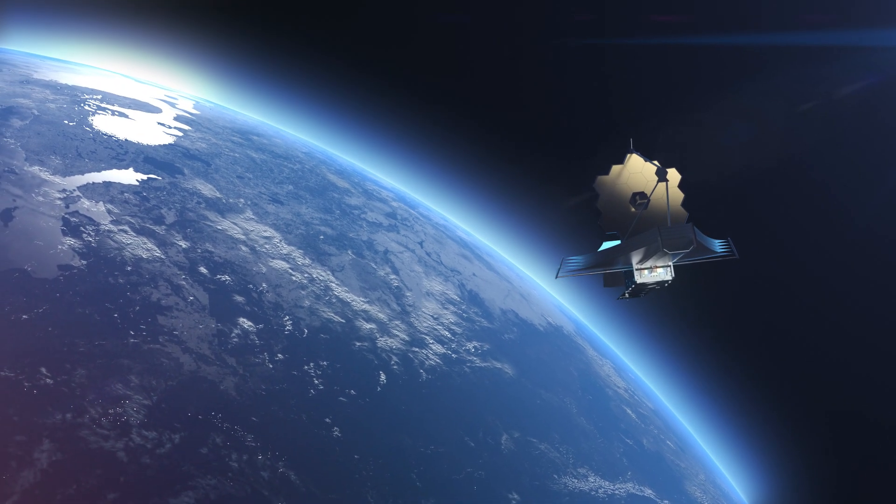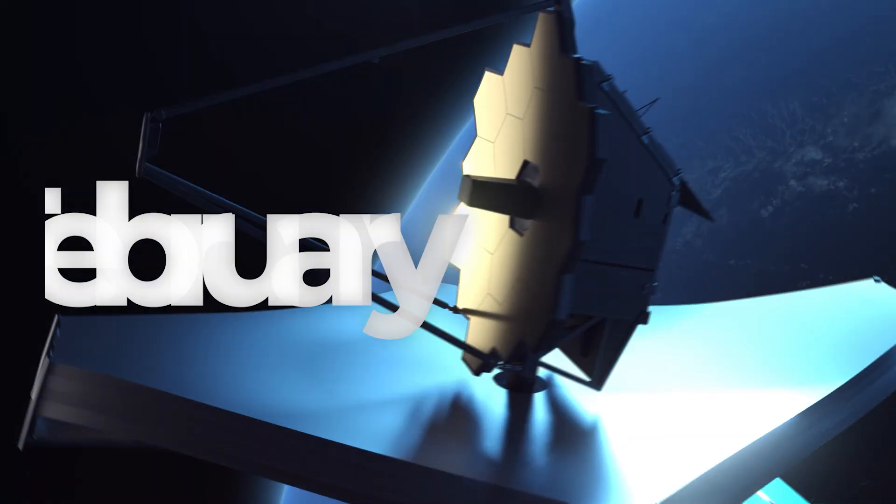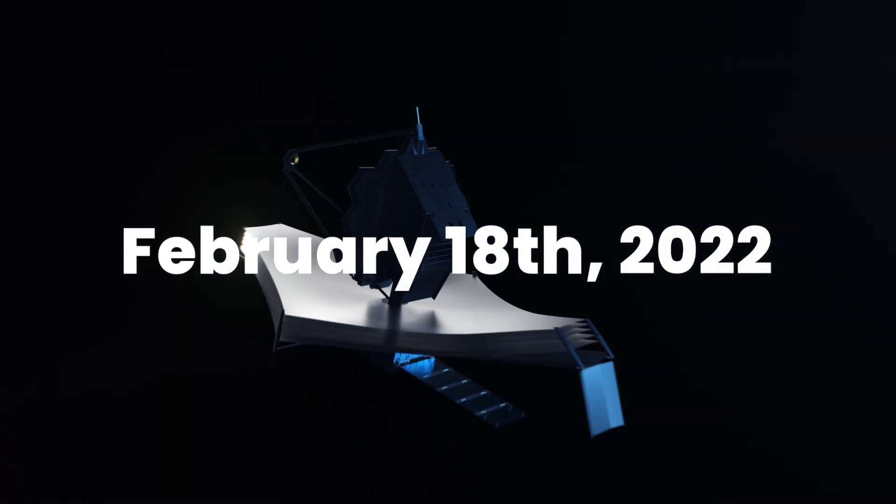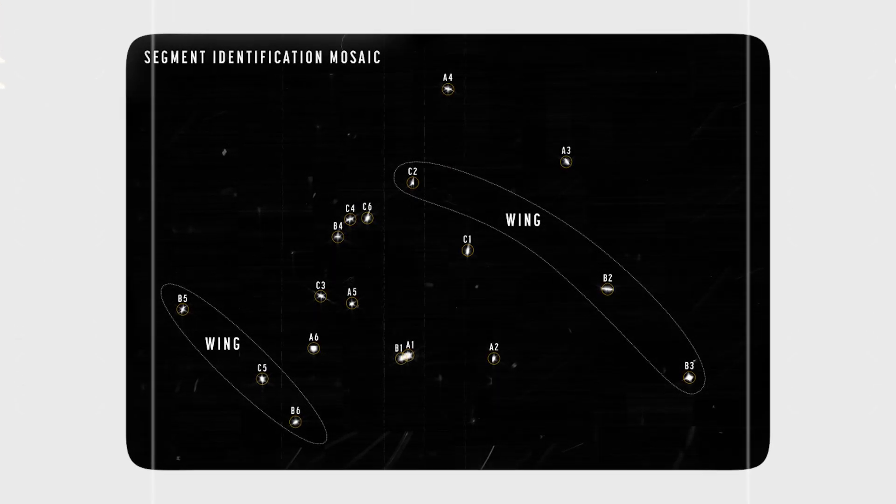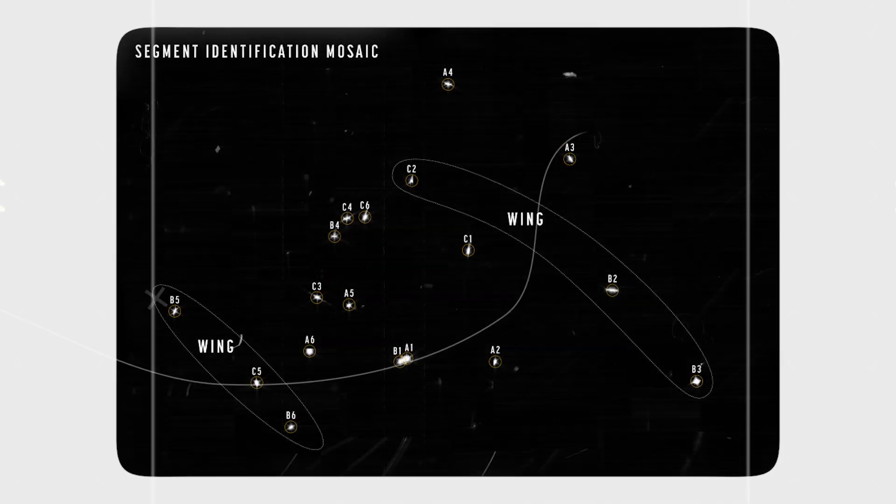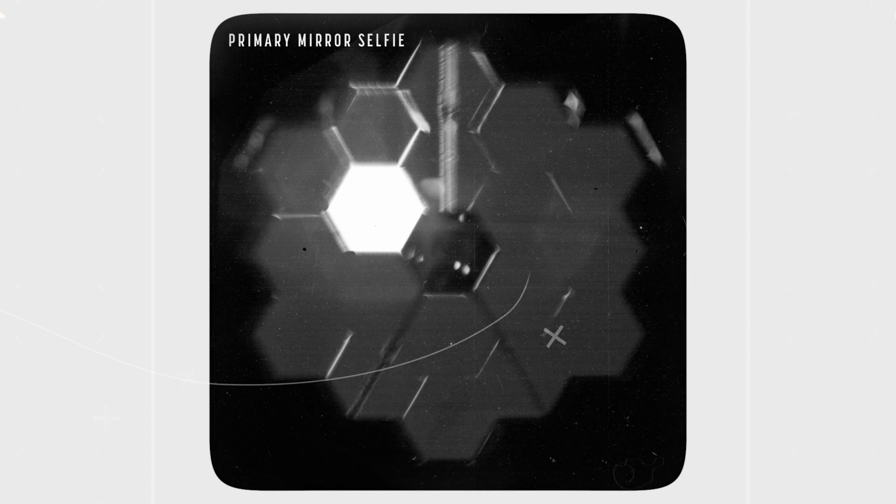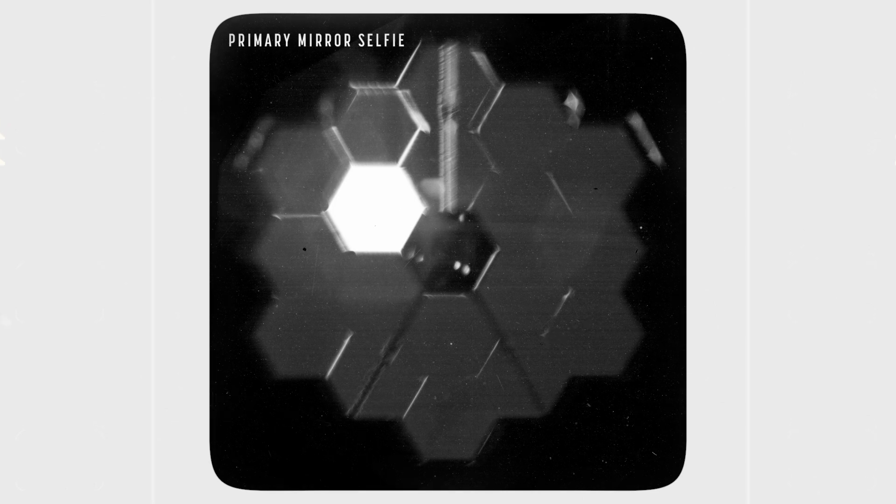Over subsequent weeks, the James Webb Telescope continued to make strides. On February 18, NASA released an improved image of HD 84406, with the 18 blurry copies of the star arranged in a neat hexagonal pattern, providing a clearer depiction of the final image once all mirror segments were aligned properly. The telescope also captured a unique selfie using a specialized camera inside the near-cam instrument, showcasing its precise alignment capabilities.